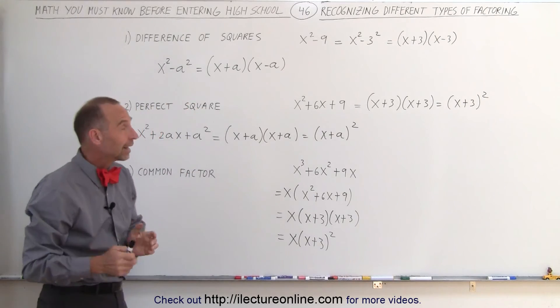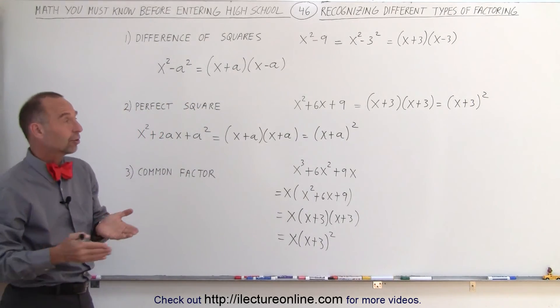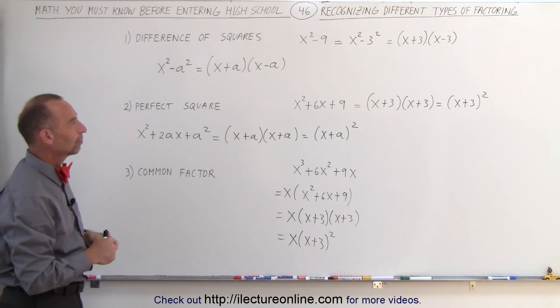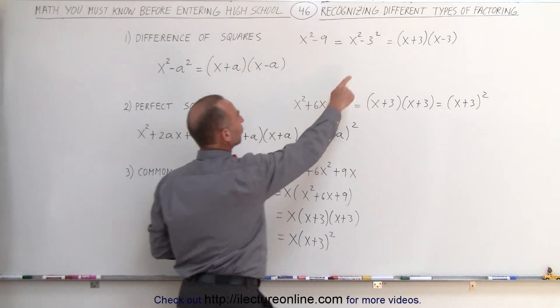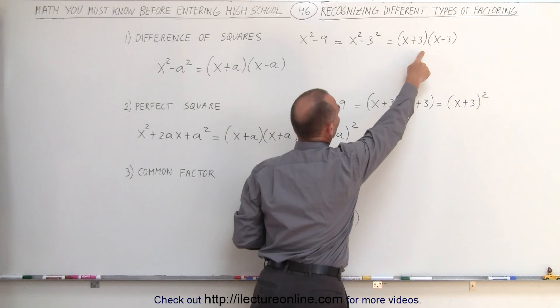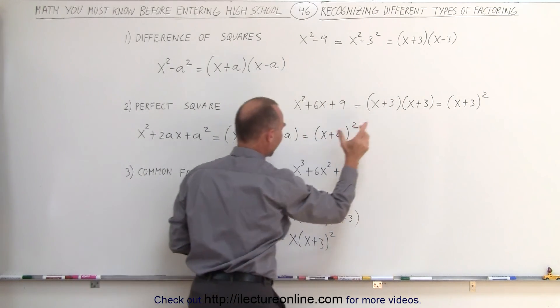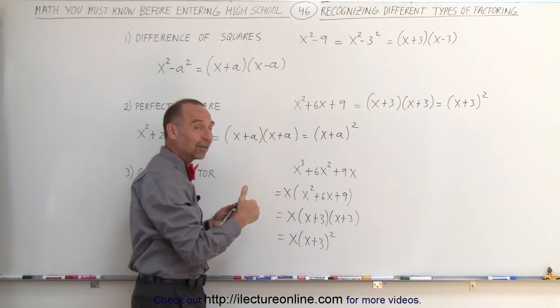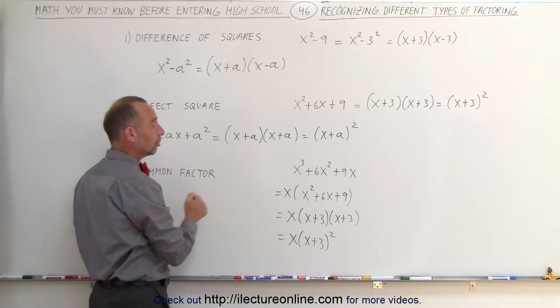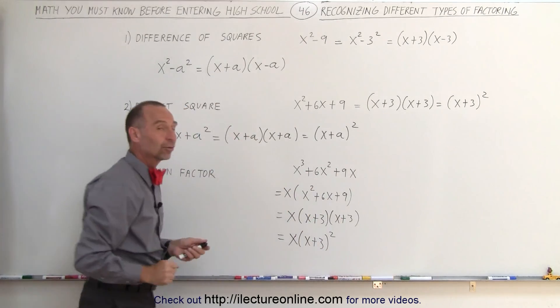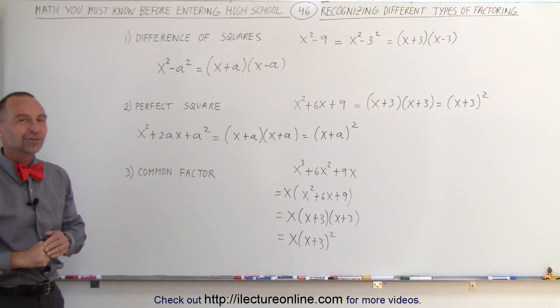It means you have to be able to recognize these forms before you try to factor them, because there are very special factoring techniques associated with each one of them. Again, the difference of squares can be factored like this. The perfect square can be factored like this. And finally, if you have something that already has a factor in it, a common factor as we call it, you should factor out a common factor first before you try to factor the rest. And that's how it's done.